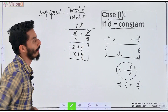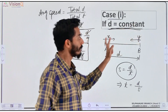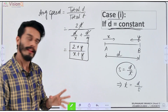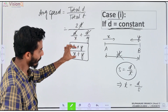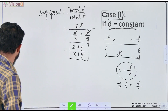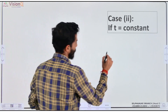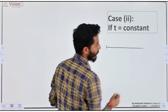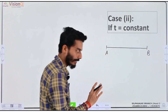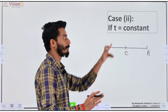So the formula to find average speed when distance is constant is 2XY / (X + Y). That is the formula. Now the next case: what if time is constant? Sometimes time taken is fixed. Let's see the next example.